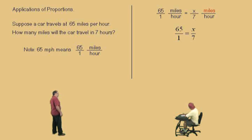Now, how do we solve this, Charlie? Cross-multiply. That's right, cross-multiply. Okay. Now, 65 times 7 is what?